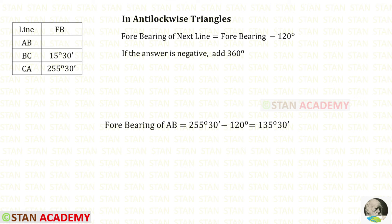Now using this forebearing, we can find the forebearing of AB: 255 degrees 30 minutes minus 120 degrees. We will get 135 degrees 30 minutes.